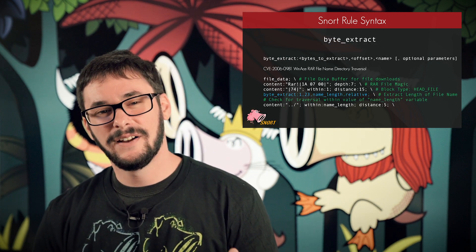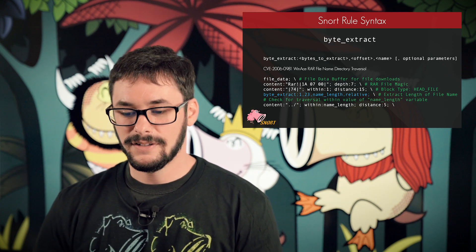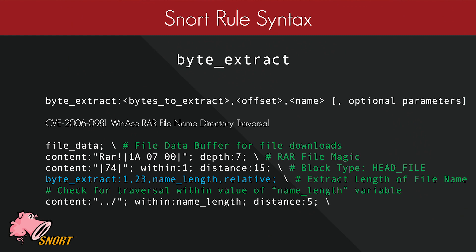Next, we have byte extract, with very similar syntax. Here is detection for CVE-2006-0981, WinAce RAR file name directory traversal. Once again, we use the file data buffer, then we look for the RAR file magic. We know that within the binary structure of a RAR file, hex character 0x74 represents a block type of file header. We verify that this is exactly 15 bytes from the file magic. Now we want to determine the length specified for the file name — we extract one byte, 23 bytes from our previous match since it is relative, and store that value in the variable name_length. We can then use that length in our next content match as we look for the directory traversal within name_length bytes, five bytes from where we extracted it.